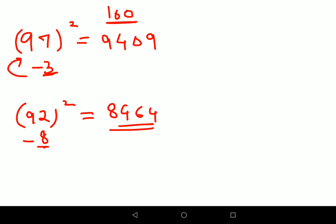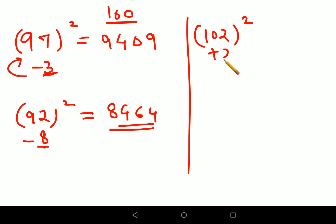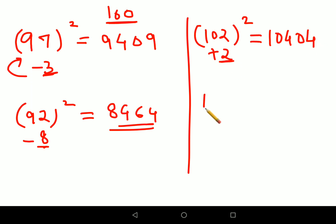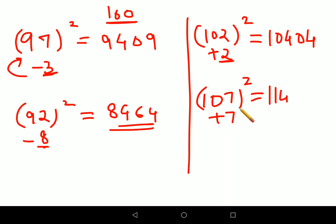Now let's try numbers greater than 100. For 102 squared: it is 2 digits ahead of 100, so add 2 to 102 to get 104, then put 2 squared as 04. So 102 squared is 10404. For 107 squared: add 7 because it is 7 away from 100. Add 7 to 107 to get 114, then put 7 squared which is 49. So 107 squared is 11449.